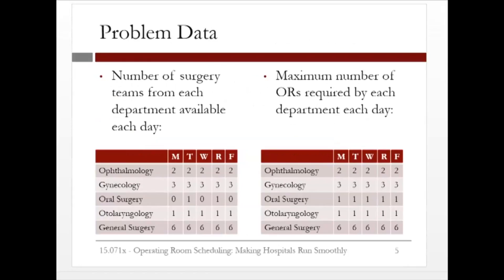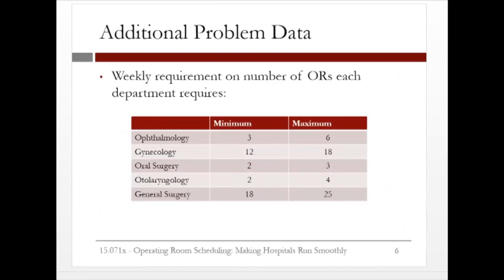Let's consider the rest of the problem data. We need to consider the number of surgery teams from each department available each day, as well as the maximum number of operating rooms required by each department each day. Frequently these numbers are the same — for example, ophthalmology requires at most two operating rooms every day, and they have two surgery teams available every day. However, for oral surgery, they require at most one operating room every day, but the oral surgeon is only present on Tuesdays and Thursdays. Additionally, each department has weekly requirements on the number of operating rooms they need — for example, gynecology needs at least 12 operating rooms in a given week, and at most 18.